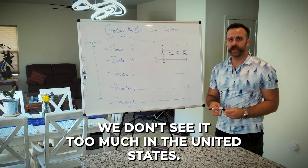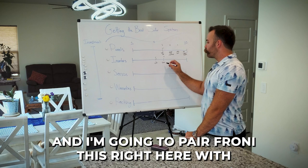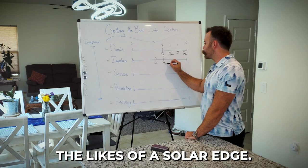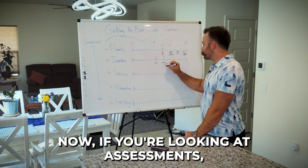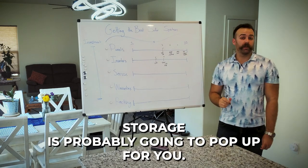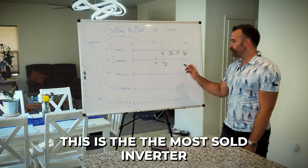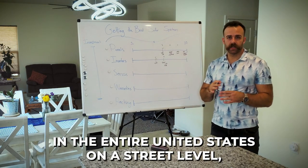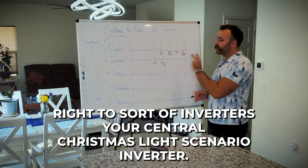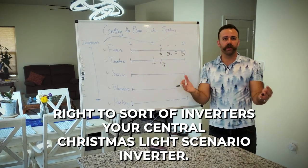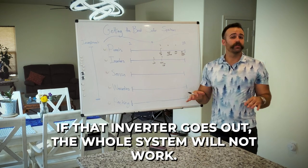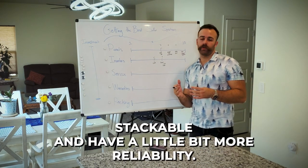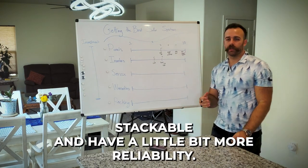And I'm going to pair Fronius right here with the likes of SolarEdge. Now, if you're looking at assessments, SolarEdge is probably going to pop up for you. This is the most sold inverter in the entire United States on a string level. Two sorts of inverters: your central Christmas light scenario inverter - if that inverter goes out, the whole system will not work. Or you have microinverters, which are modular, stackable, and have a little bit more reliability than a string inverter.